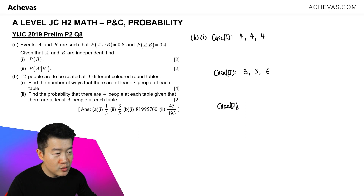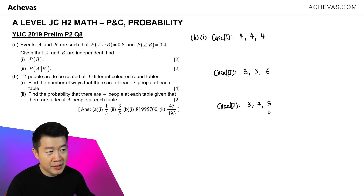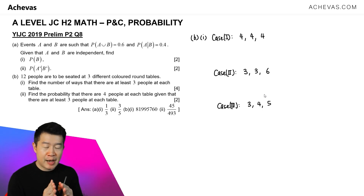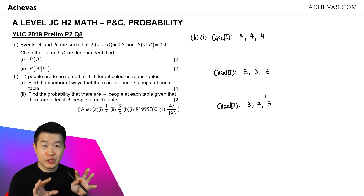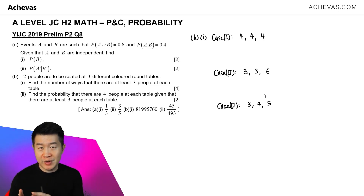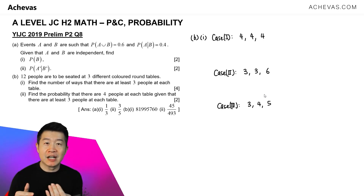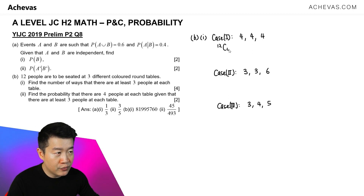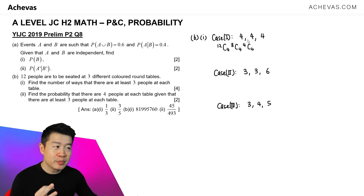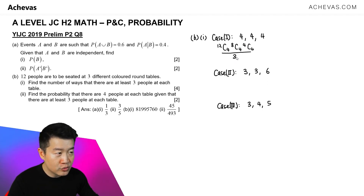Case 3: the first table has 3 people, the next table has 4 people, and the last table has 5 people. To calculate the number of ways for each case, I'm breaking the arrangement into 2 processes: first, breaking the people into 3 groups; then assigning those groups to the 3 colored tables and arranging them in circular seating. For Case 1, we arrange into 3 groups of 4: 12 choose 4, then 8 choose 4, then 4 choose 4. Because we have 3 indistinguishable groups of 4, we divide by 3 factorial.